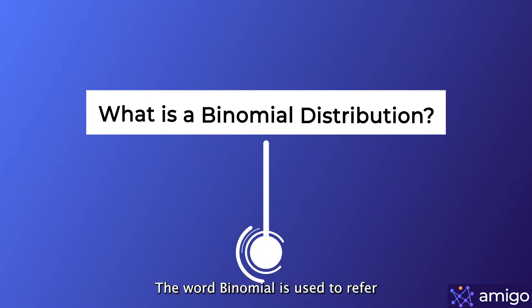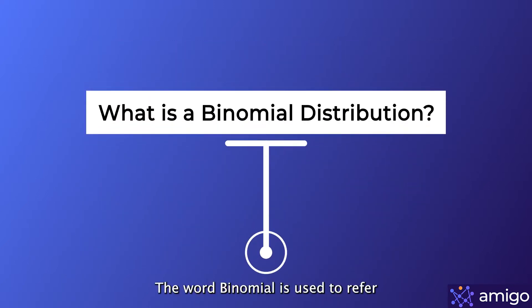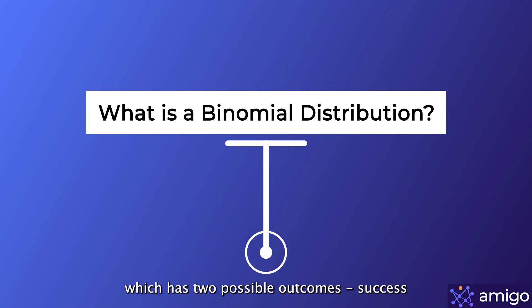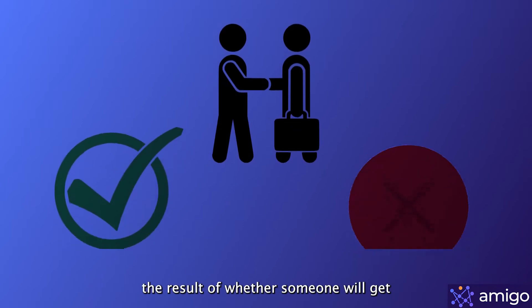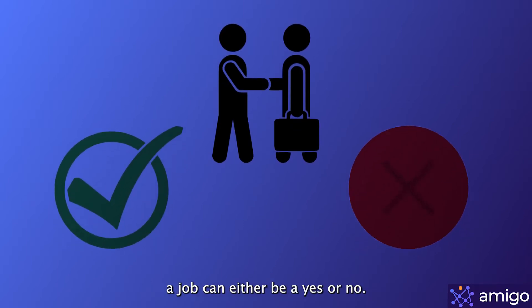The word binomial is used to refer to any event which has two possible outcomes: success or failure. For instance, the result of whether someone will get a job can either be a yes or no.